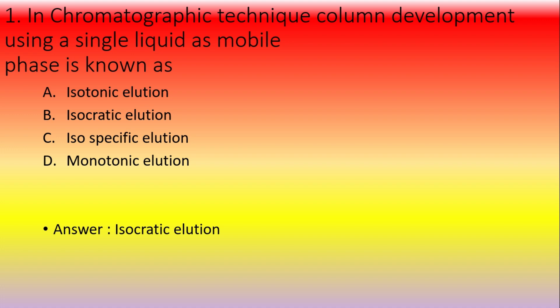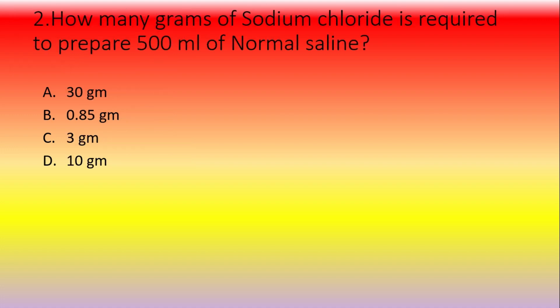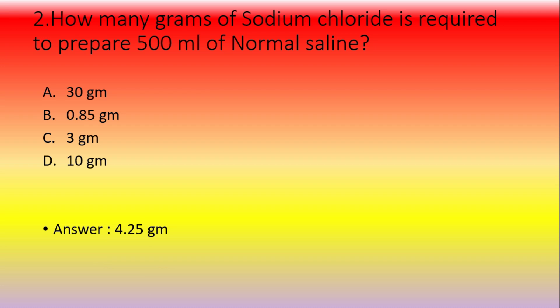How many grams of sodium chloride is required to prepare 500 ml of normal saline? Option A: 30 g, option B: 0.85 g, option C: 3 g, option D: 10 g. The answer is 4.25 g. Normal saline concentration is 0.85 g% — meaning 0.85 g per 100 ml. So for 500 ml: 0.85 × 5 = 4.25 g.